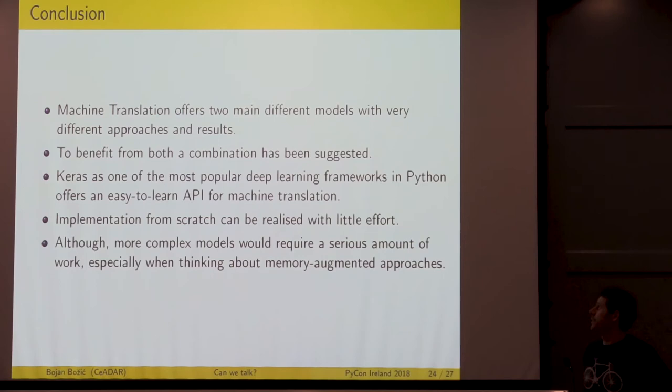To conclude, machine translation has two main different models that can be used. One is the neural model. The other is the statistical model, which are very different approaches. It would be somehow good to be able to combine both, which has been suggested in a paper currently. Keras is the most popular deep learning framework in Python, can be very easily used as an API for machine translation. We have seen some implementation from scratch that can be realized with very little effort. But the more complex the model gets, the more amount of work we would have to put in. When thinking about memory augmented approaches, the combination of both that I introduced, it would be quite a bit of work to get everything running there.